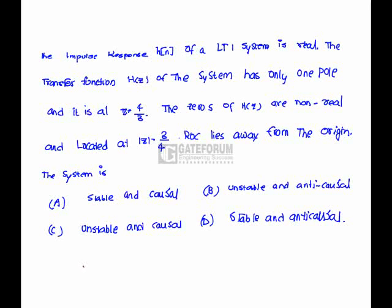Question is, the impulse response of an LTI system is real. The transfer function H of the system has only one pole and it is at z equals 4 by 3. The zeros of H are non-real and located at mod z equals 3 by 4. And ROC lies away from the origin. The system is...